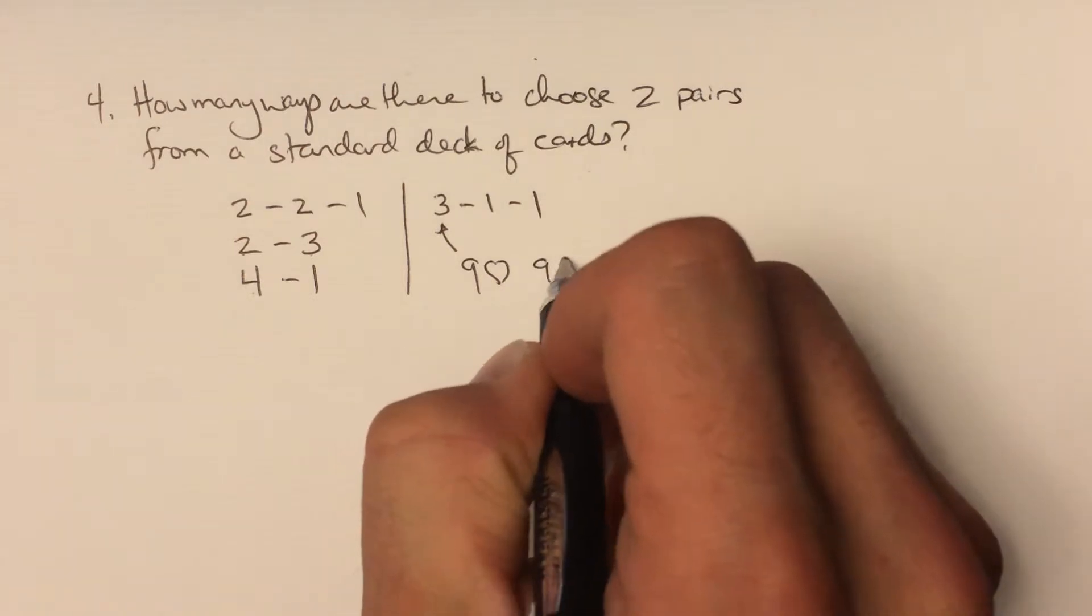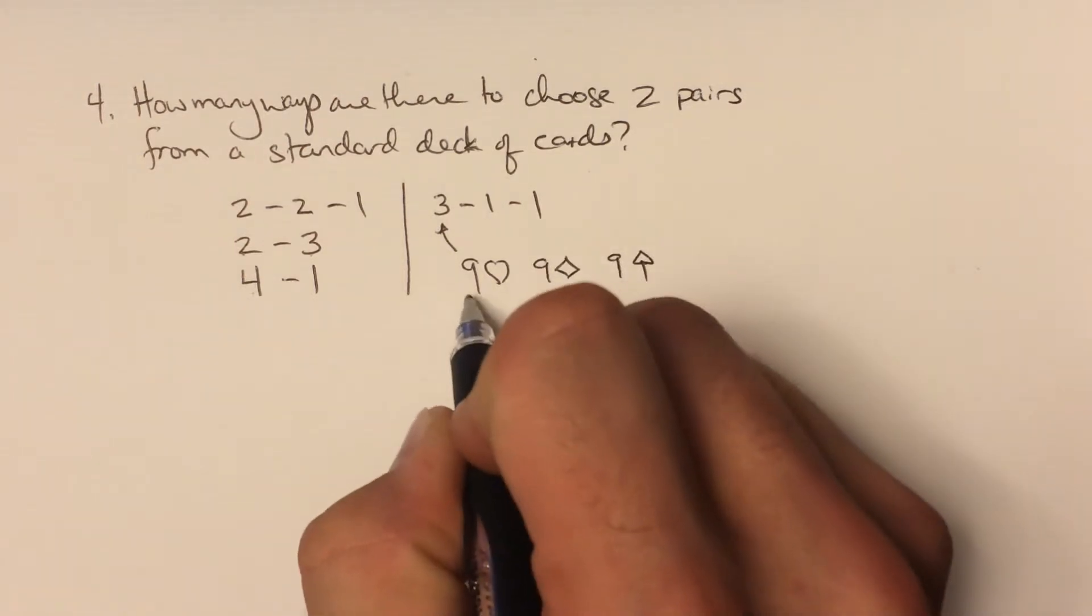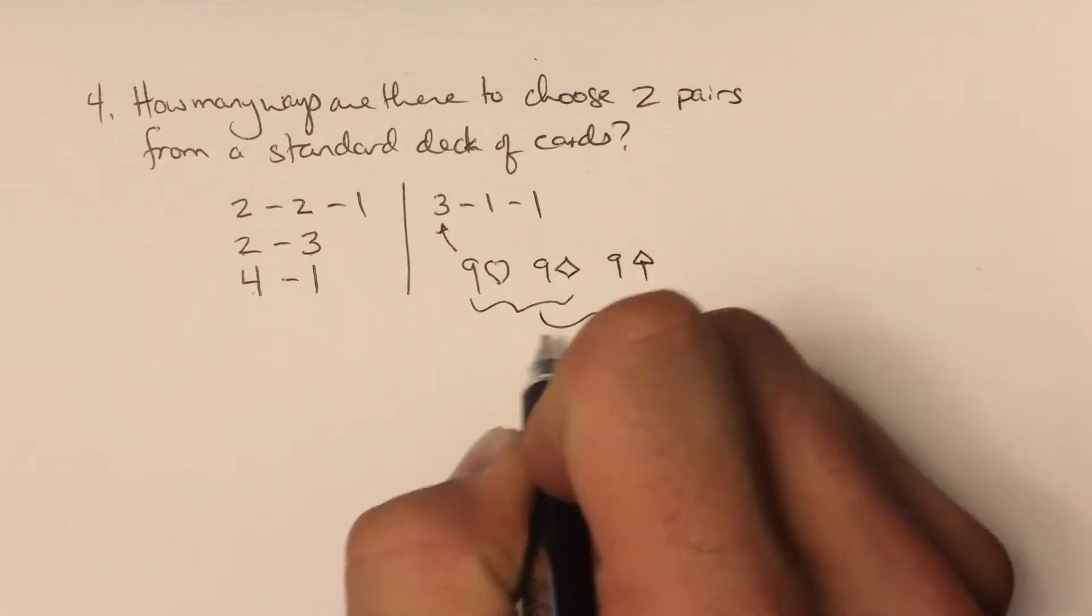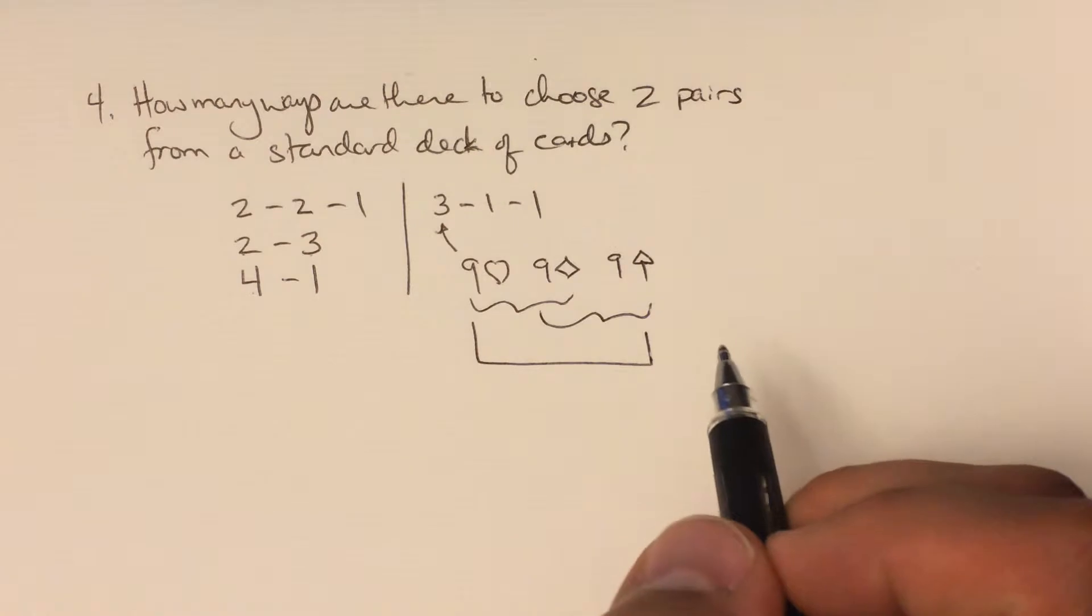For example, if you had the nine of hearts and the nine of diamonds and the nine of spades, here's a pair, here's a pair, and these two on the outside also make a pair. There would actually be three pairs there if you were counting things that way.